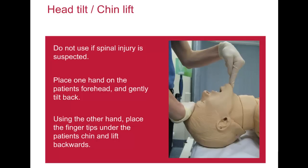In unresponsive adults, it is reasonable to open the airway using the head tilt chin lift manoeuvre. To perform this, one hand is placed on the forehead or on top of the head, and the other hand provides the chin lift. The head, not the neck, is tilted backwards. It is important to avoid using excessive force, especially when a neck injury is suspected. The chin lift is performed by holding the chin using the thumb and fingers to pull the chin upwards and open the mouth, moving the tongue and soft tissues away from the back of the throat.